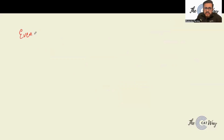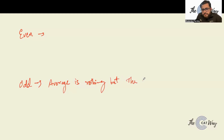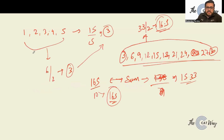In an AP series there are two cases: when the total number of observations is odd, and when it is even. When the total number of observations is odd, the average is simply the middle value.